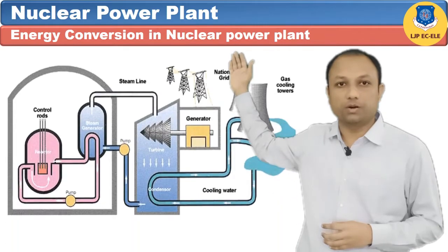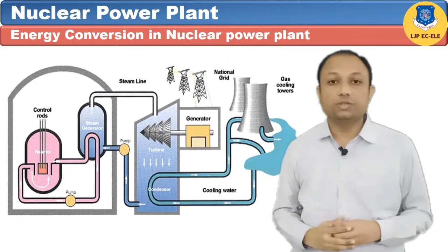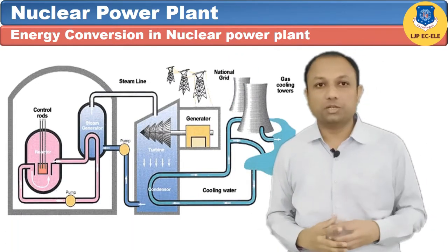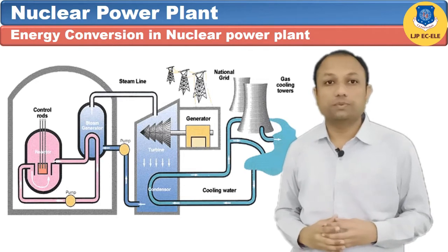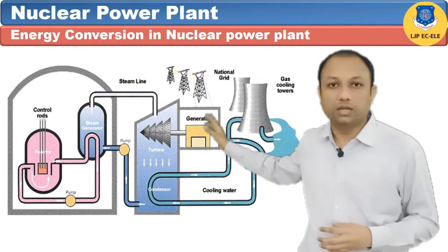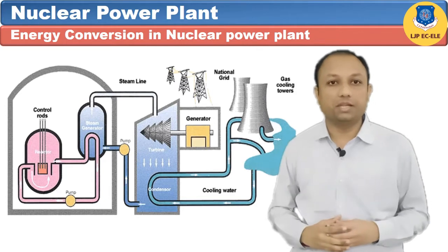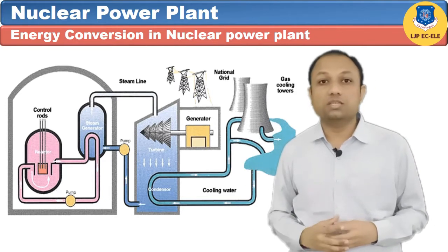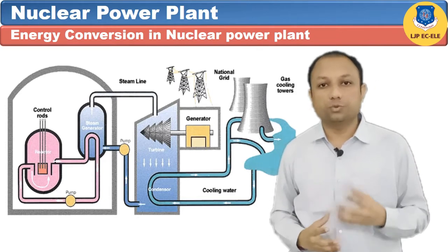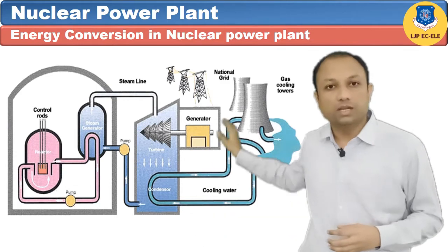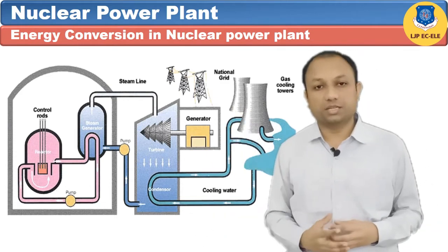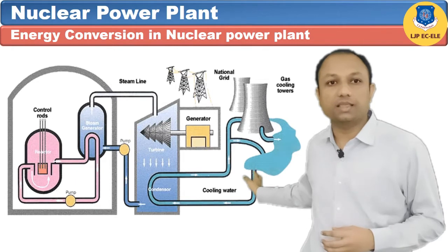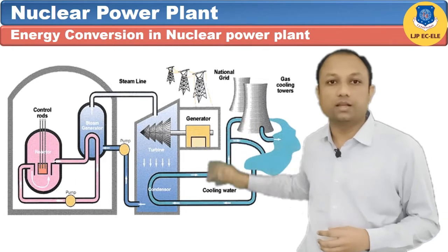Now let's discuss about the energy conversion in a nuclear power plant. In a nuclear power plant, the fission of nuclear fuel is made in the nuclear reactor, so the nuclear energy of the nuclear fuel is converted into heat energy. Water is converted into steam with the help of a heat exchanger. Heat energy is then converted into mechanical energy by the steam turbine.